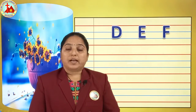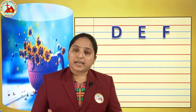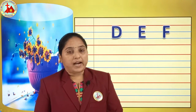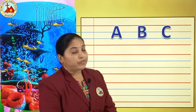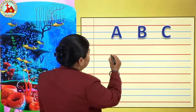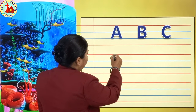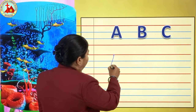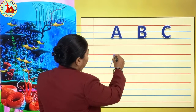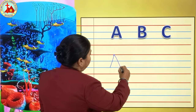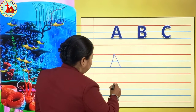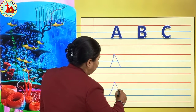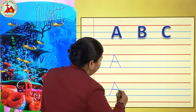So children, we have seen the pictures related to letters A, B, C, D, E, and F. Now let's see how to write them. We will revise writing letters A, B, and C. First we will write letter A — we will start from the red line to the second blue line. Slanting line, one more slanting line, and a sleeping line. That is letter A.